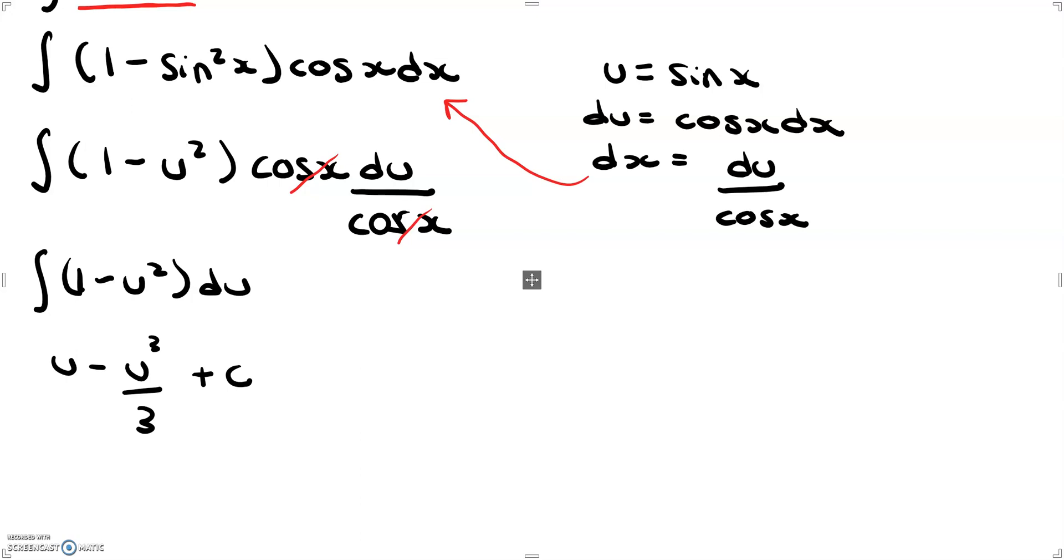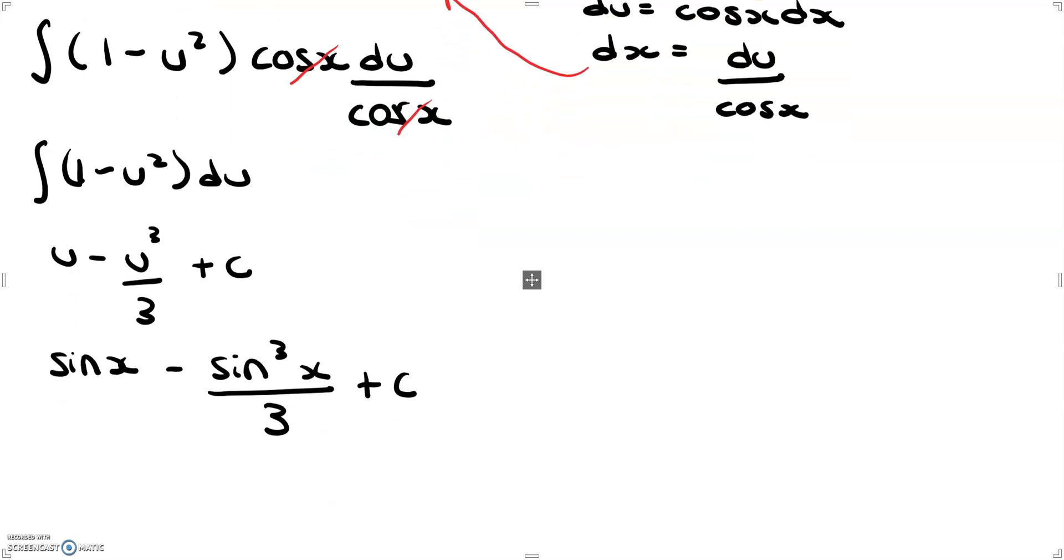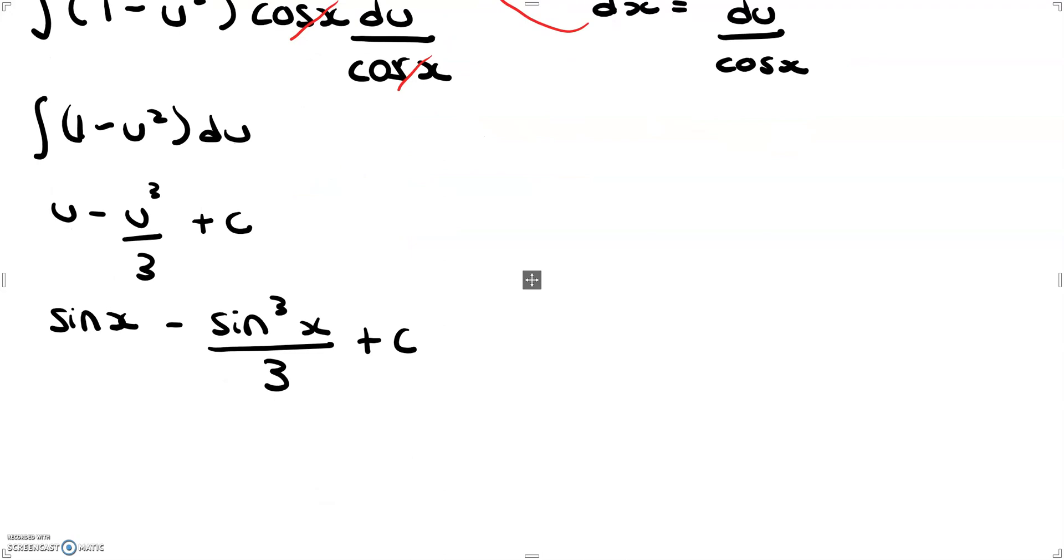Now all we have to do is sub back in for u. And if we recall, u is equal to sine x. So we get sine x minus sine cubed x divided by 3 plus c. And that is our answer.